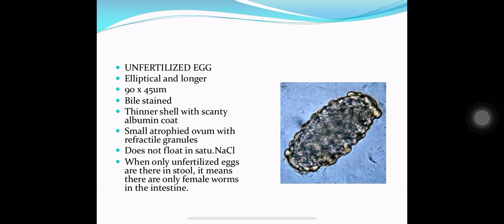The unfertilized eggs of Round Worm are elliptical and longer, about 90 micrometers long. They are bile stained and have a thinner shell with a scanty albumin coat. They contain a small atrophied ovum with refractile granules inside. Unfertilized eggs do not float in saturated solution of common salt. When only unfertilized eggs are found in stool, it means there are only female worms in the intestine.